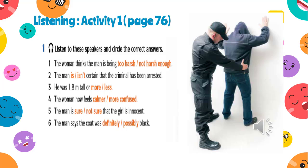Now for the first activity, you may refer to your textbook page 76. Read the instructions carefully. You will hear six short recordings. Before I play the audio, read the instructions and the questions from number one to number six. The instruction is: listen to these speakers and circle the correct answers. You may guess the meaning of words you do not understand based on other clues in the sentence and later in the recording.